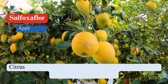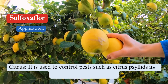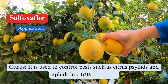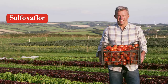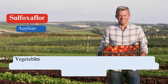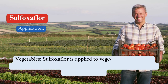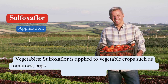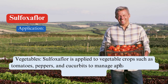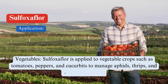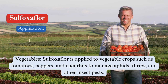Citrus. It is used to control pests such as citrus psyllids and aphids in citrus orchards. Vegetables. Sulfoxiflor is applied to vegetable crops such as tomatoes, peppers, and cucurbits to manage aphids, thrips, and other insect pests.